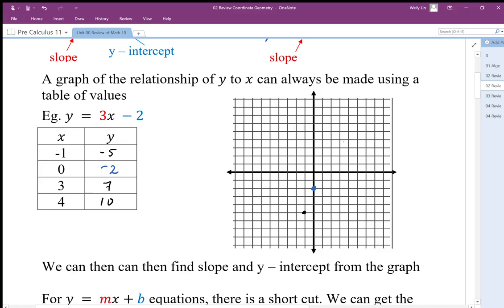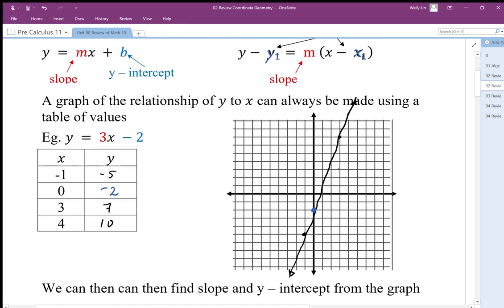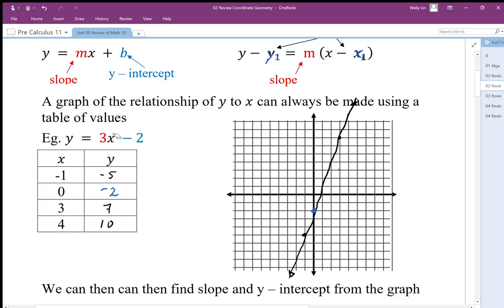We can plot a couple other points: three over, seven up; four over, ten up somewhere around here. Then we can see that generates a straight line relationship. We can make a table of values. It's important to recognize that the relationship can be expressed as an equation, as a table, and as a line in space.